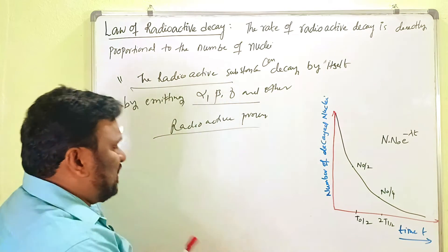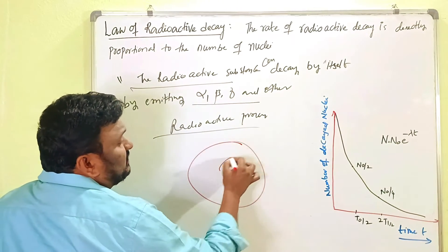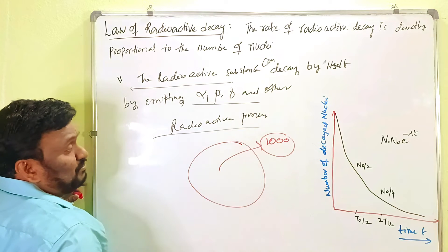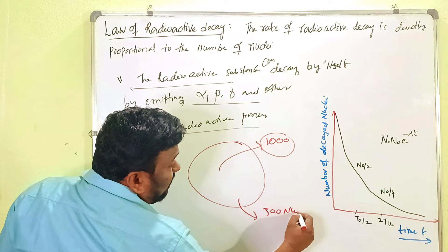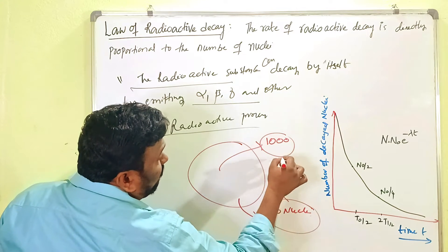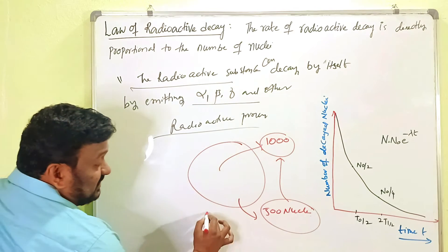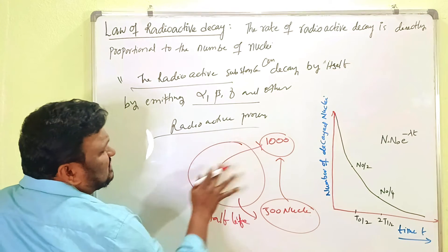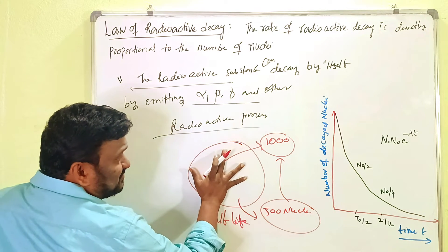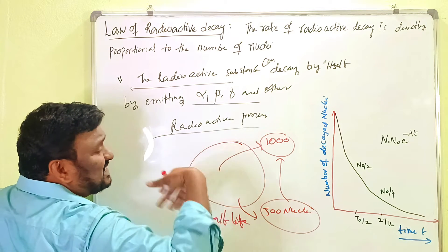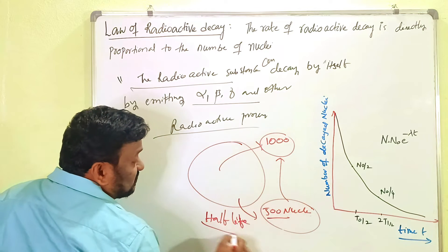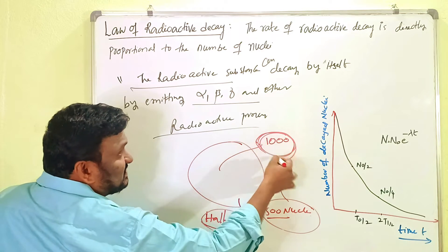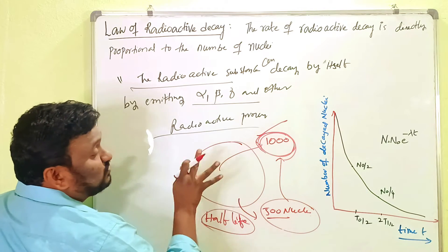For example, consider a sample with one thousand nuclei. The time taken by the sample to disintegrate 500 nuclei — that is, half of the maximum — is called the half-life. So: thousand nuclei are there, the time taken to disintegrate 500 of them is the half-life. And the time taken to disintegrate all the nuclei completely is what we call the lifetime.